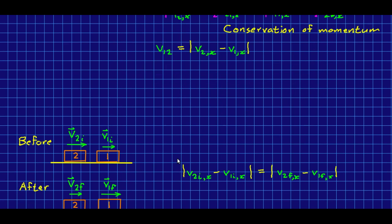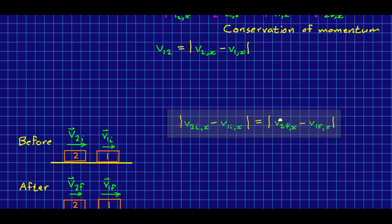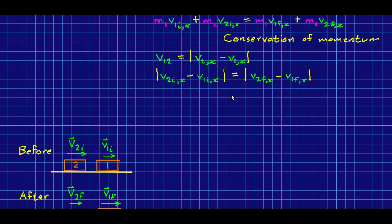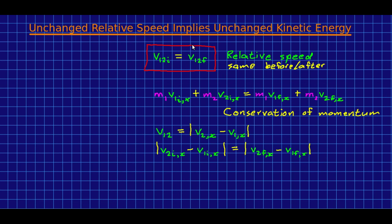The final piece I need here is just to take the statement that the relative speed is the same before and after, and rewrite it using that. So all I've done here is taken v12i and I've expanded it out using this expression, and I've done the same for the other side of the equation.